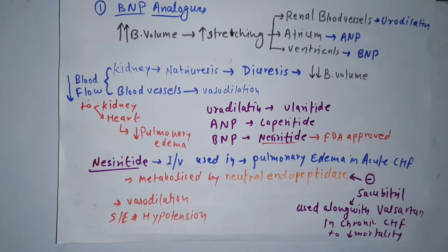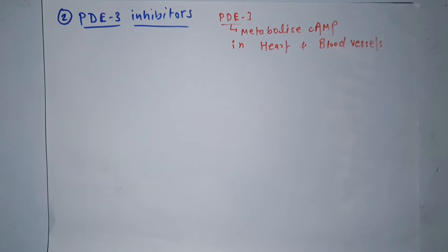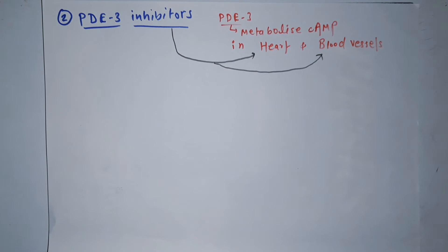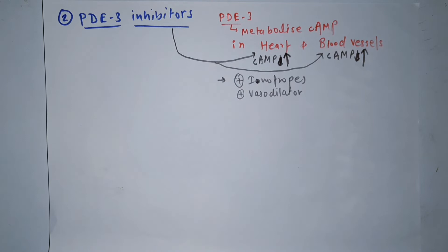Nesiritide also causes vasodilation, which is why its side effect is hypotension. Now, the second class of drugs: phosphodiesterase 3 inhibitors. This enzyme, phosphodiesterase 3, metabolizes cyclic AMP in the heart and blood vessels. When we give these drugs, they cause an increase in cyclic AMP in the heart and blood vessels, so they act as both positive inotropes and vasodilators.